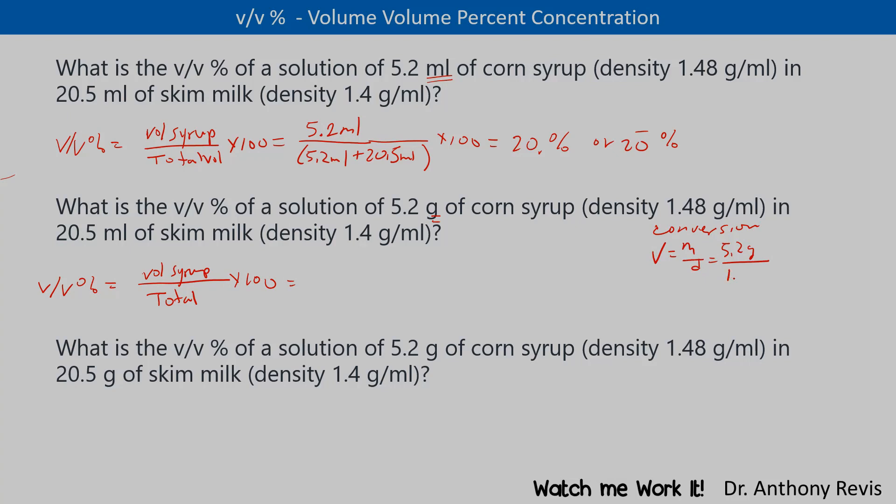So this is 5.2 divided by 1.48 grams per mil. That's the density. We run this through our calculator. We get 3.5 mils.